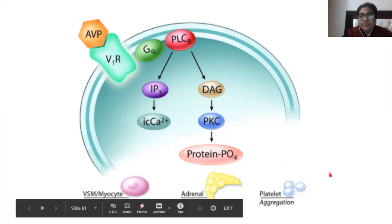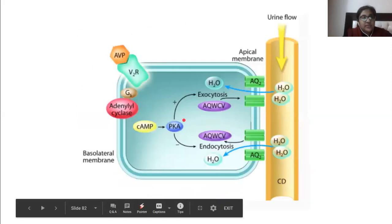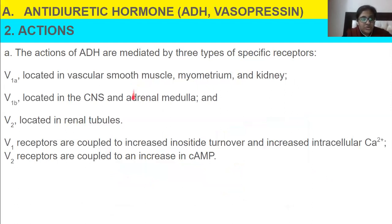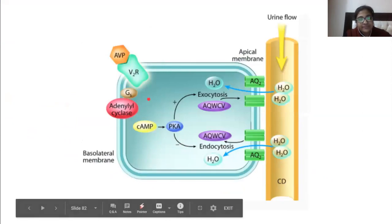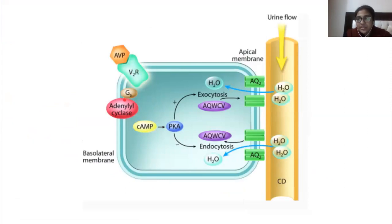V2 receptors are present in renal tubules and increase cAMP. V2 activates GPCR, which goes to adenylyl cyclase — an enzyme located within the membrane — which converts ADP into cAMP, producing a positive effect. This leads to the production of aquaporin channels, specifically AQP2.